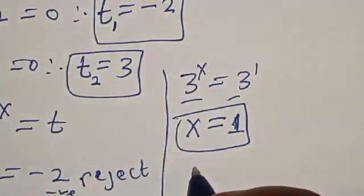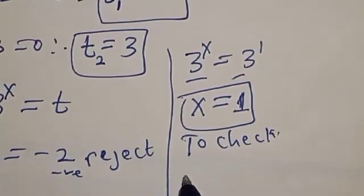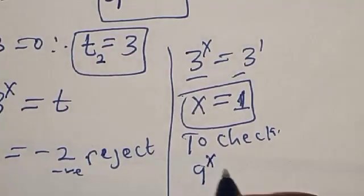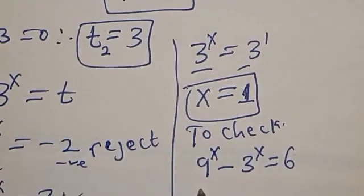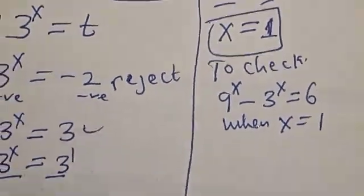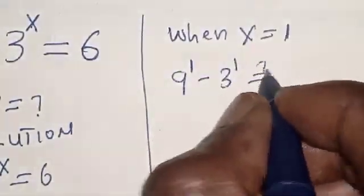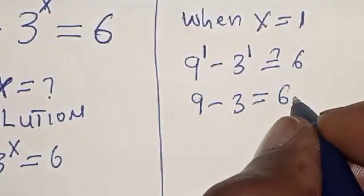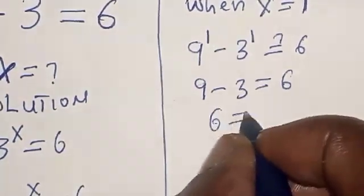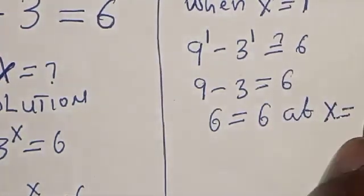Now let's check if our answer is right or wrong. To check: 9 raised to power x minus 3 raised to power x equals 6. When x equals 1: 9 raised to power 1 minus 3 raised to power 1 equals 9 minus 3 equals 6. The left hand side equals the right hand side at x equals 1.